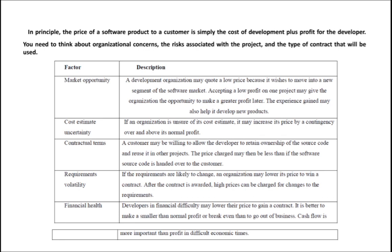For example, if a customer is willing to allow the developer to retain the ownership of the source code — that is, the customer is not willing to take ownership of the source code — then the price charged for the software will be less. Because the customer is not the owner of the source code, the company can reuse that code for the next project. That is an advantage for the company, so they will reduce the price.